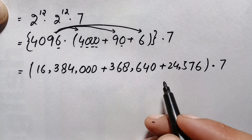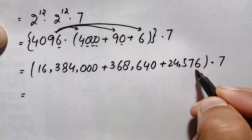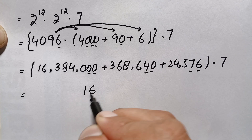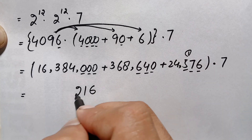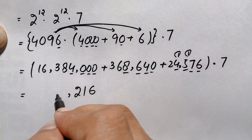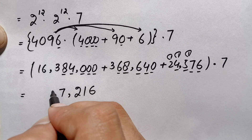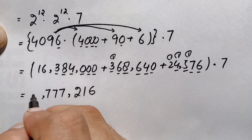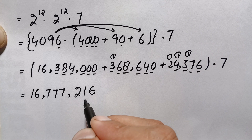Now we add all three partial products. Starting from the ones position: 6 plus 0 plus 0 is 6; 7 plus 4 is 11 plus 0 is 11 (write 1, carry 1); 5 plus 1 is 6 plus 6 is 12 (write 2, carry 1); 4 plus 1 is 5 plus 8 is 13 plus 4 is 17 (write 7, carry 1); and so on. The sum of the three numbers gives 16,777,216, and we still need to multiply by 7.